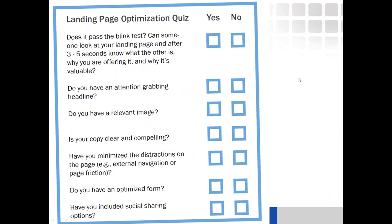Here are some quick landing page tests you can do. Number one: does it pass the blink test? If someone looked at your website within three to five seconds, do they know what your offer is, why you're offering it, and why it's valuable? Do you have an attention-grabbing headline, relevant images, and clear and compelling copy? You might be surprised — if you ask a friend or family member to try adding something to your shopping cart or sign up for your newsletter, you might find it takes many more steps than you thought. Make sure your calls to action are very clear.